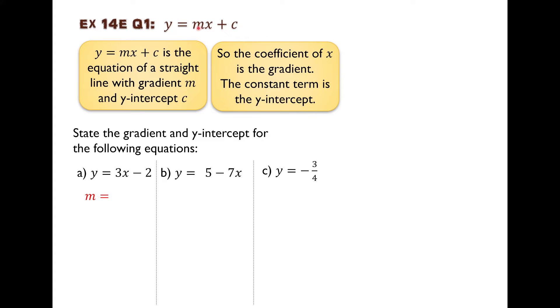m is the coefficient of x. It's the number before the x. It's what x is being multiplied by. So m is the number before the x, what x is being multiplied by. What is the coefficient of x here? It's 3. So m is 3.